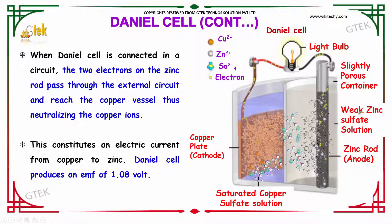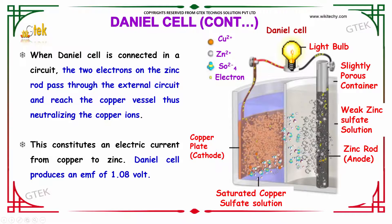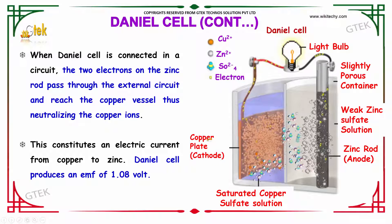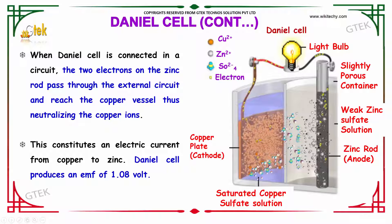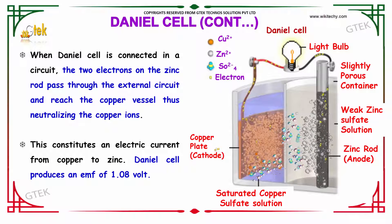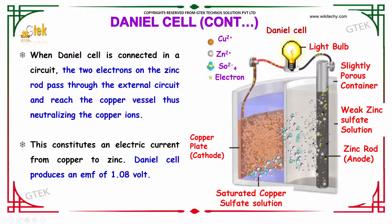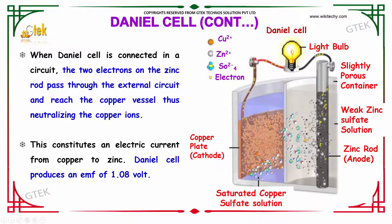You are able to see the weak zinc sulfate solution and this is the zinc rod, and saturated copper sulfate solution with the copper rod or copper plate in it. This constitutes an electric current from copper to zinc. The Daniel cell produces an EMF of approximately 1.08 volts. You are able to see the copper here, Zn²⁺ ions here, and you got your sulfate ions and the electrons which are produced.